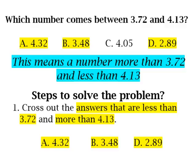C, okay, it's more than 3.72, however it is less than 4.13, so that potentially is an answer choice. And D is 2.89, well that is less than 3.72. So we know that we can cross out answer choices A, 4.32, because it is more than 4.13, we can cross out B because it is less than 3.72, and we can cross out D, 2.89, because it is less than 3.72.